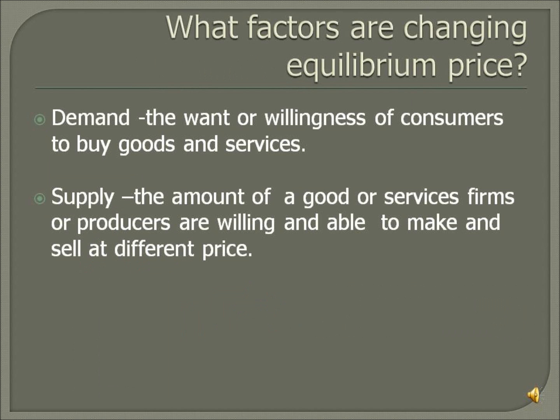What factors are changing equilibrium price? Demand is the want or willingness of consumers to buy goods and services. Supply is the amount of goods or services firms or producers are willing and able to make and sell at different prices. These are changing the equilibrium price.